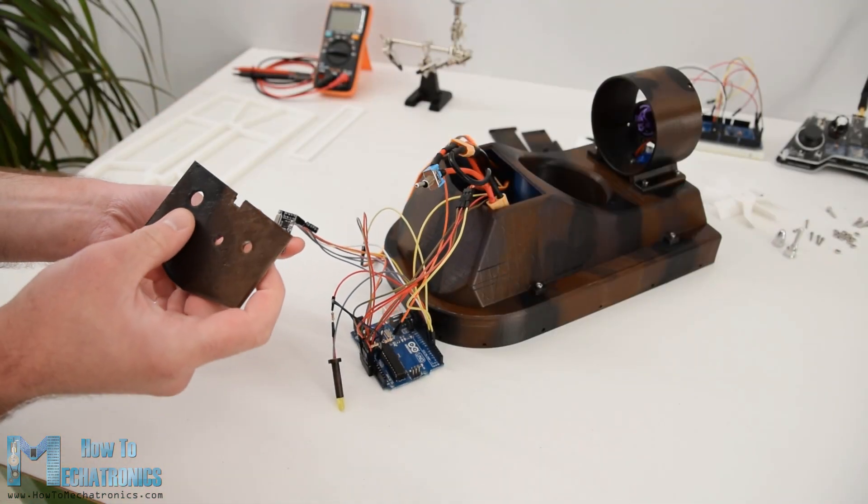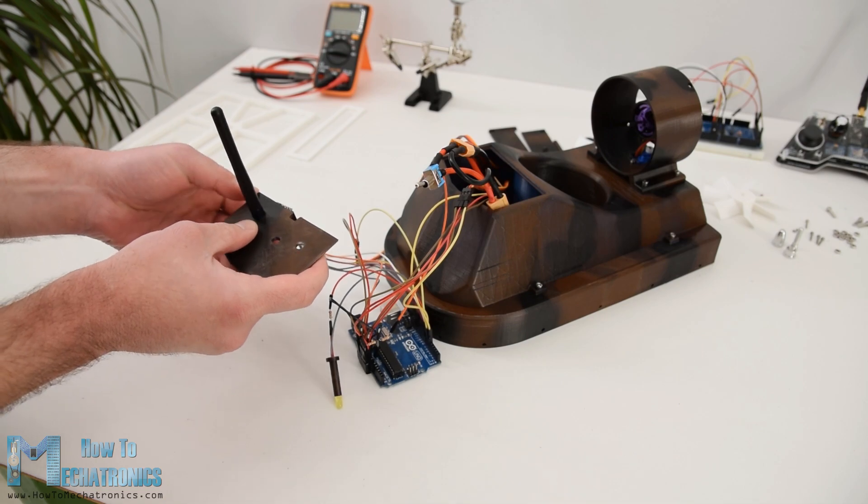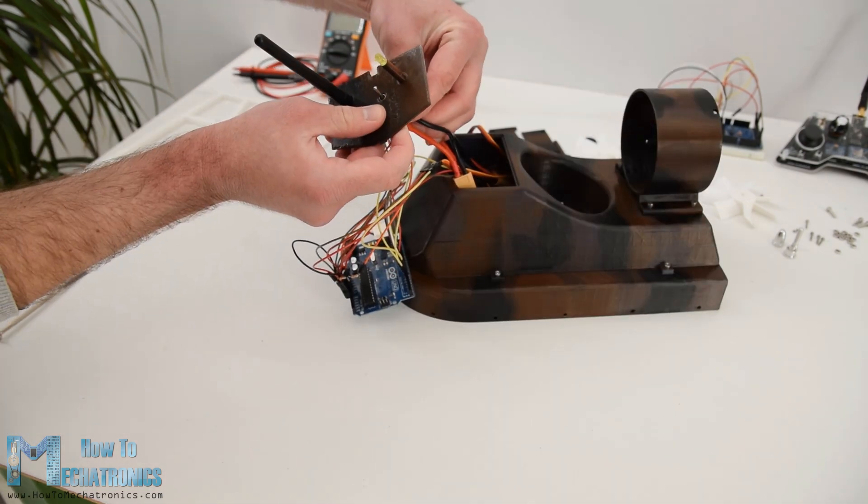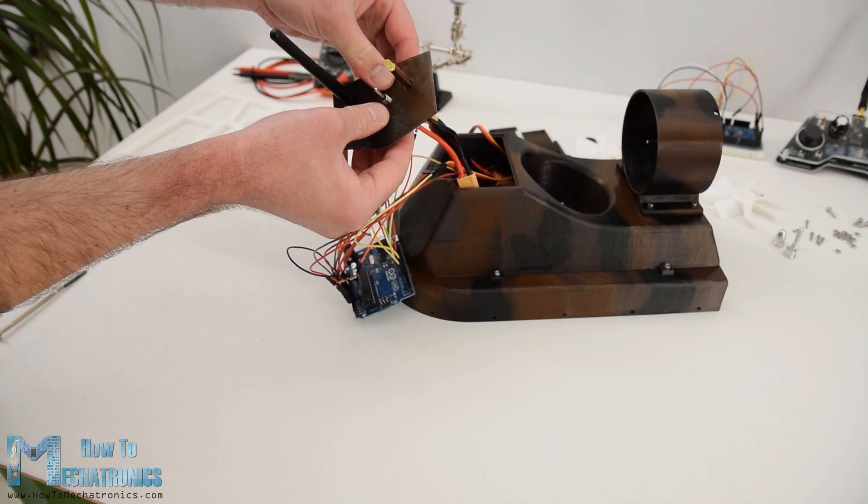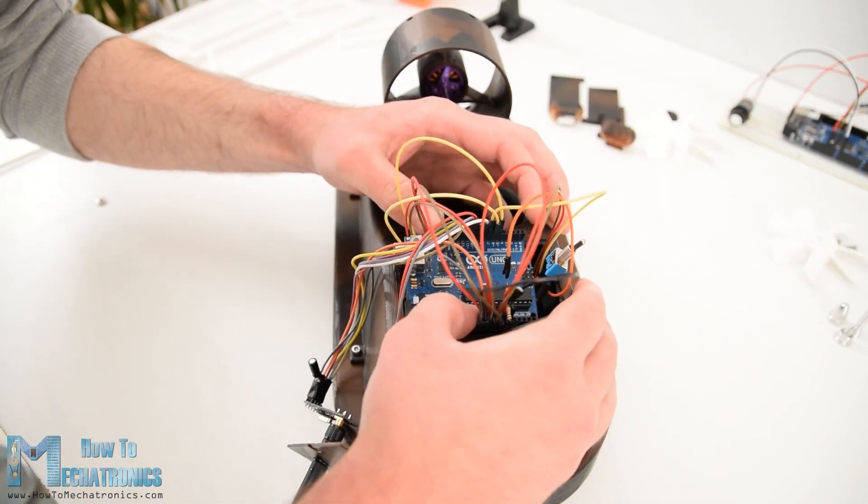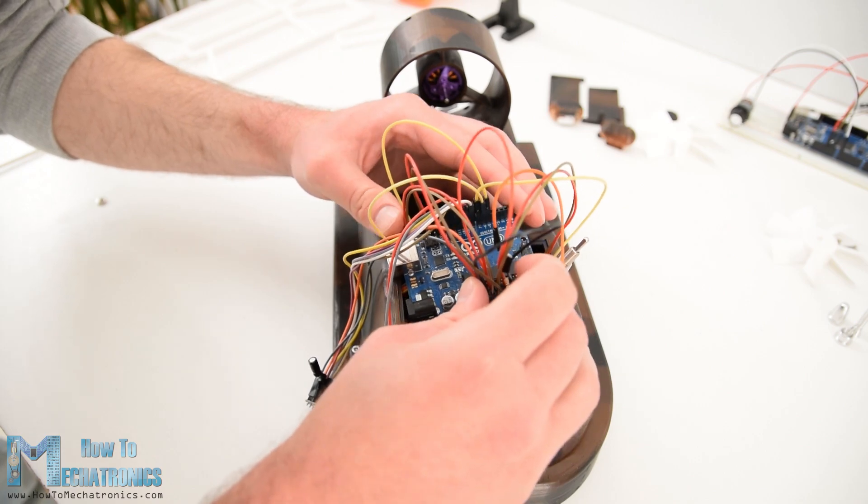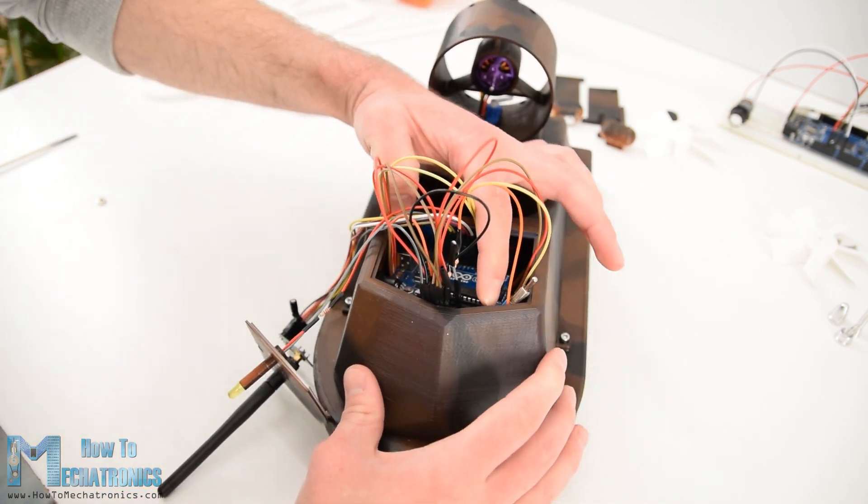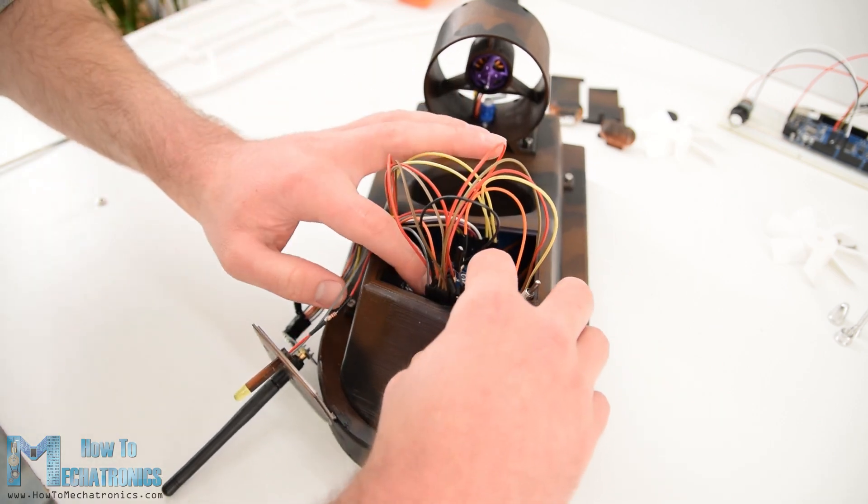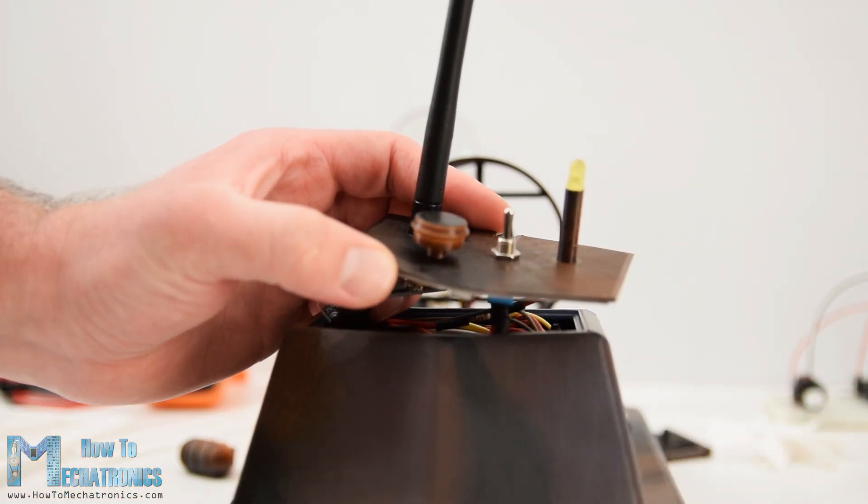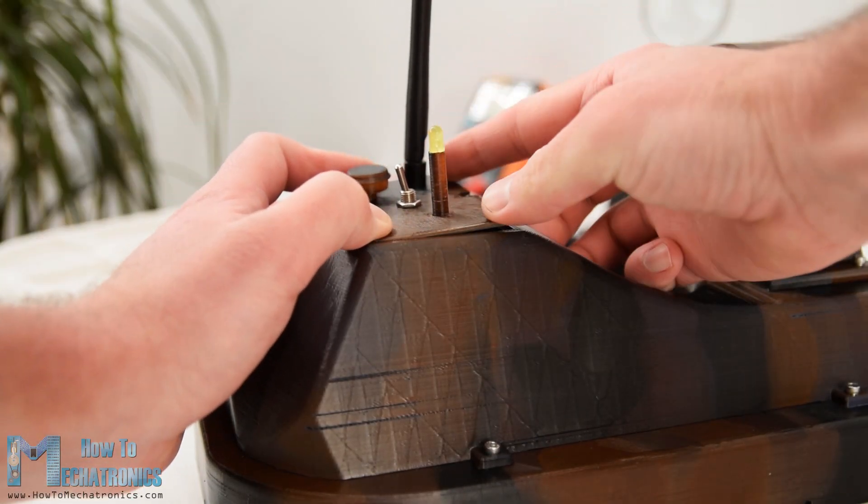So once I connected everything to the Arduino I passed the NRF24L01 antenna, the indicator LED and the power switch through the top cover of the cockpit. Then I just needed to squeeze everything into the cockpit. It was a bit tight here because I used Arduino Uno and I probably should have used an Arduino Nano instead. However I managed to fit everything in, also attached a small decorating part to the cover and then I just clipped it to the cockpit body.